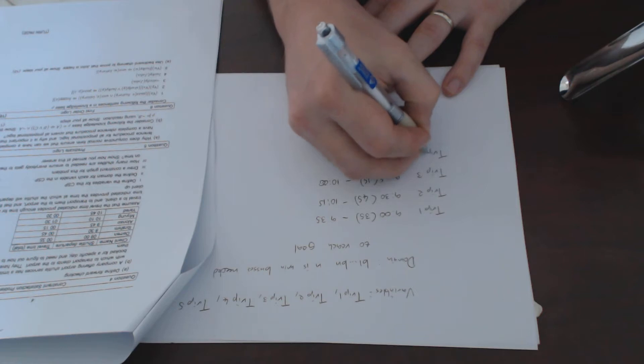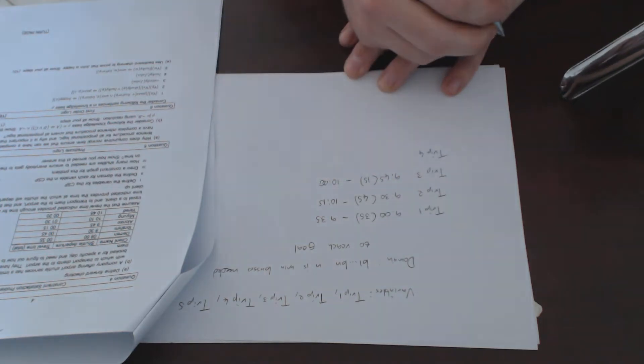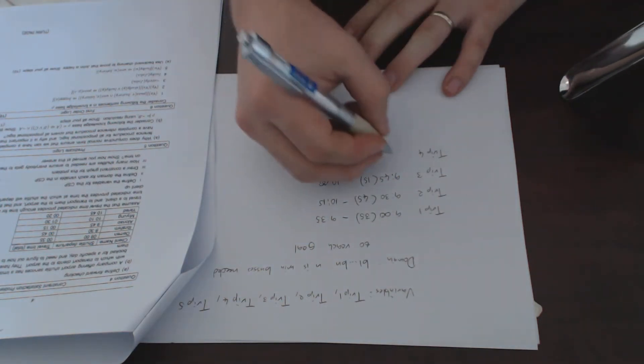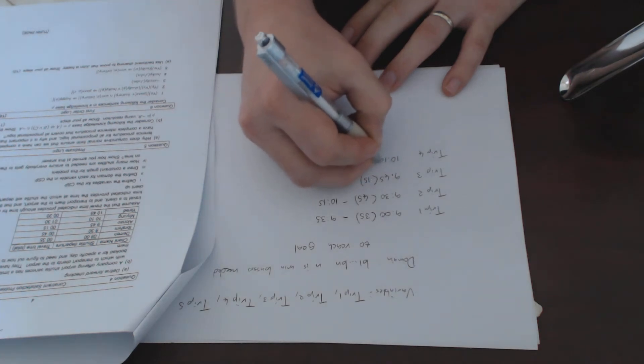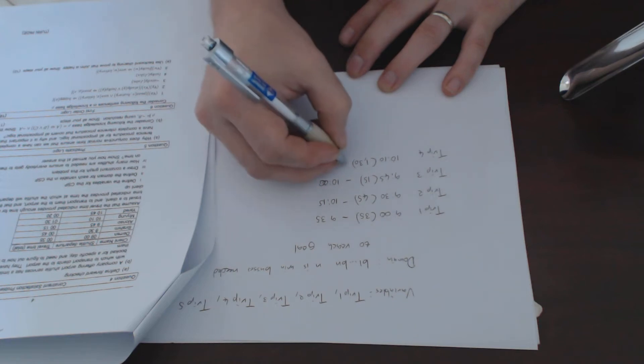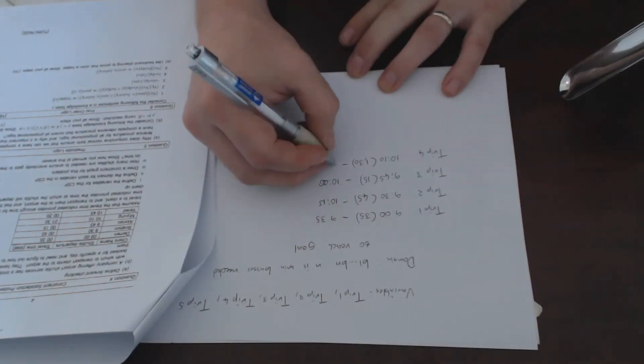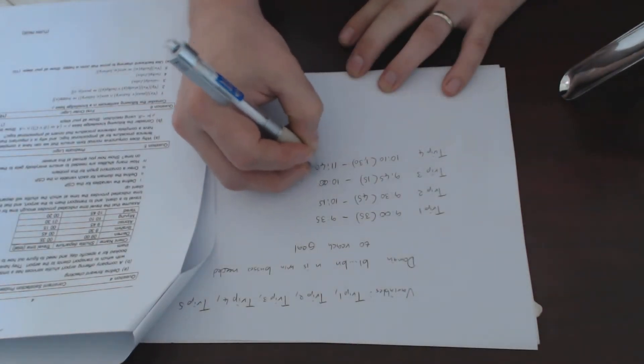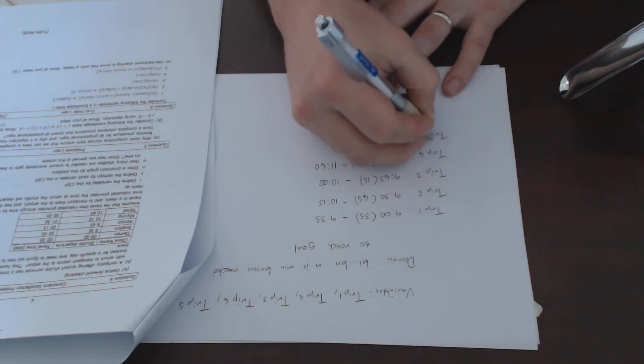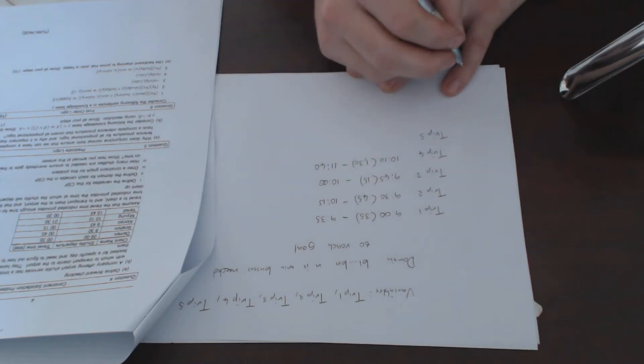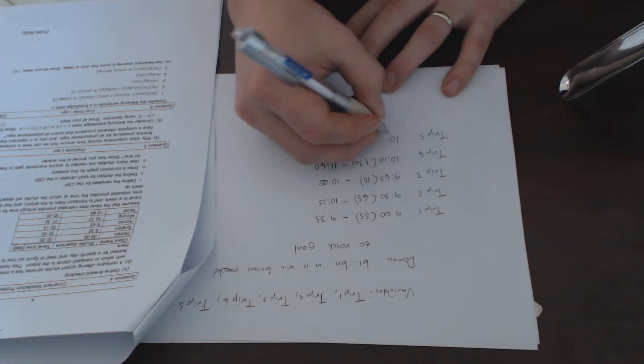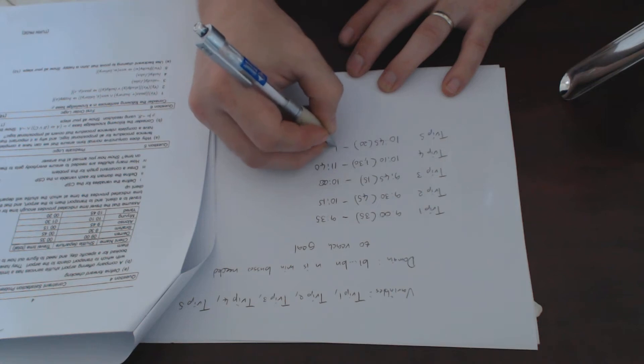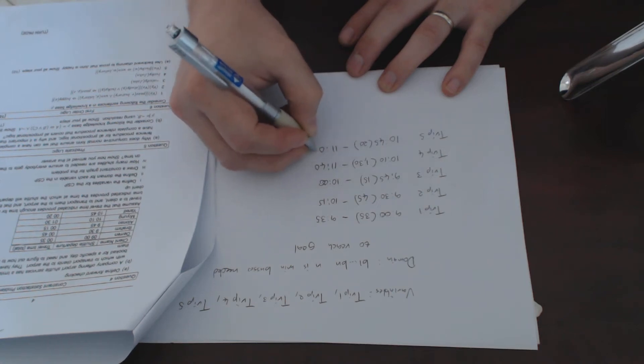Trip4 starts at 10:10, it's a long trip, one hour and 30 minutes, which means it will end at 11:40. And trip5 starts at 10:45, it's a 20 minute trip which means it's going to end at 11:05.